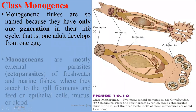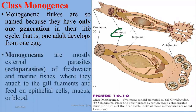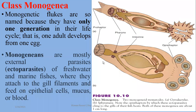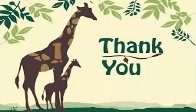The digestive tract is shown in the diagram, including the pharynx, Prohaptor, intestine, and the gonadal system — testes and ovaries. Two examples are mentioned here: Gyrodactylus and Spironura. They are almost 1 cm in length. This was a short description of Class Monogenea in Phylum Platyhelminthes.